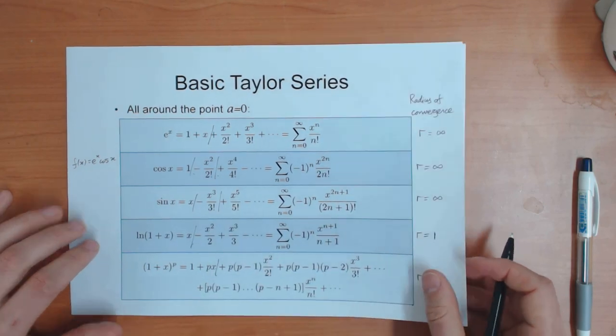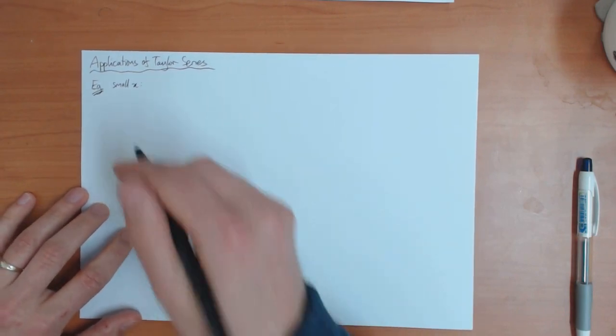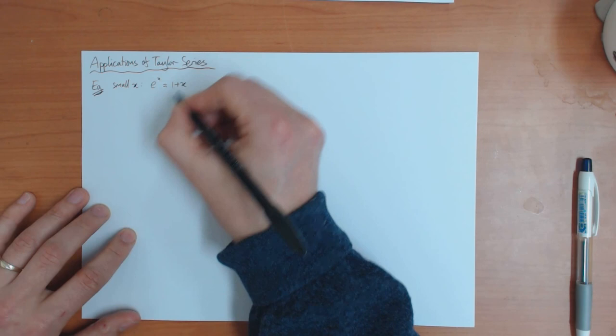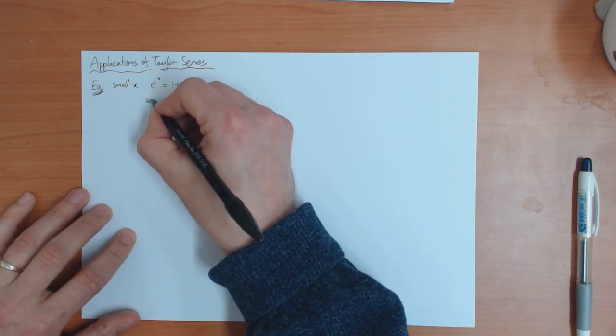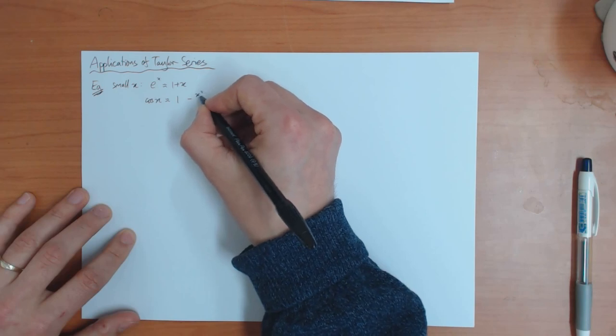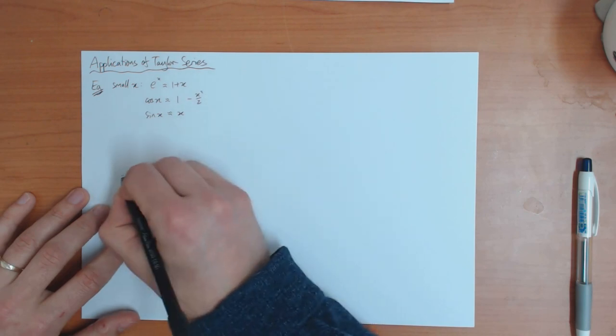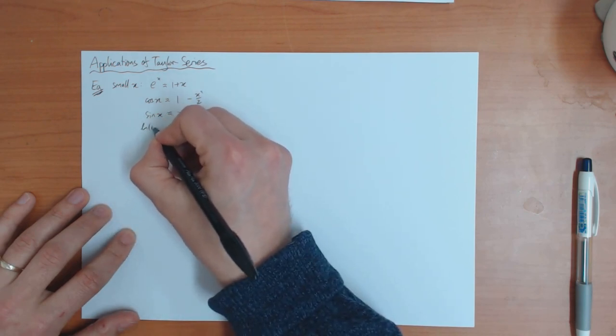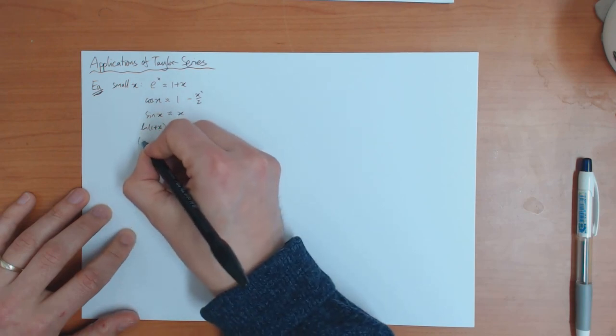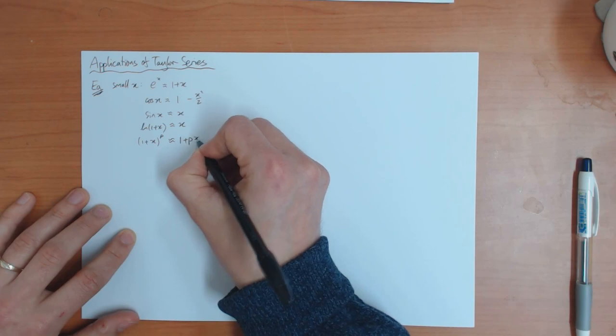So in other words, if you're expanding around x close to zero, as you often are, then you find e to the x is approximately one plus x. Cos of x is approximately one. The next term here is minus x squared over two. Sine x is approximately equal to x. Log of one plus x is approximately equal to x. And one plus x to the p is approximately equal to one plus px.